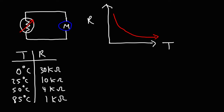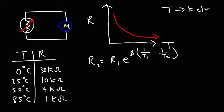The formula describing the resistance and temperature of an NTC thermistor is: R2 = R1 × e^(beta × (1/T1 − 1/T2)), where e ≈ 2.718. If you know R1, the resistance at temperature T1, you can calculate the new resistance R2 at a different temperature T2. Note that temperature must be in Kelvin, not Celsius. To convert, add 273.15 to the Celsius temperature.